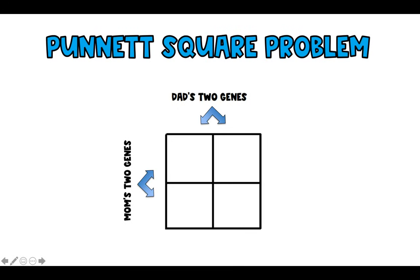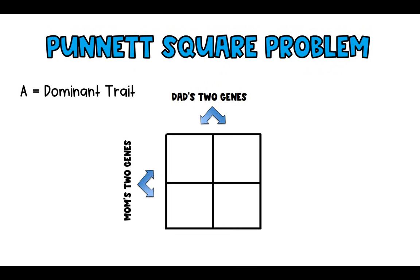Let's actually look at this Punnett square problem. I'll walk you through the steps, and then I'll give you practice problems to work through together. The dominant trait is always written as an uppercase letter — it could be for eye color or hair color. Uppercase letters are the dominant ones, and they win out over recessive ones, which are the lowercase letters.